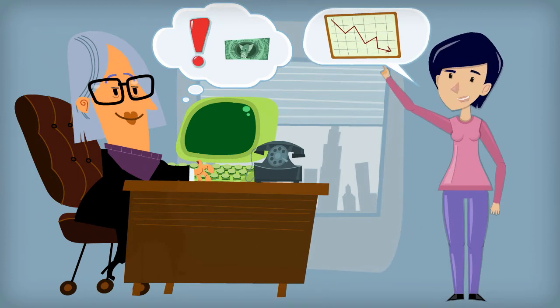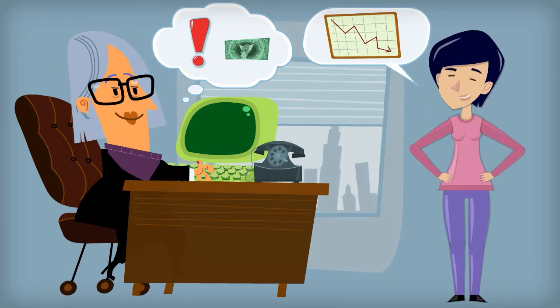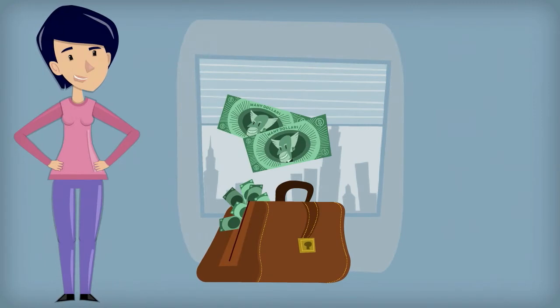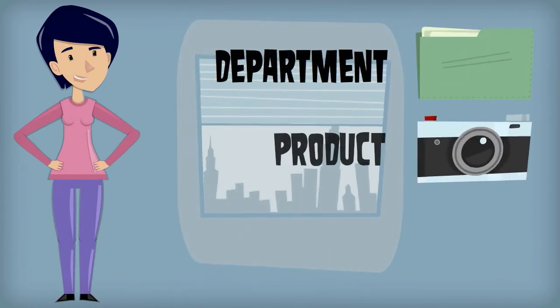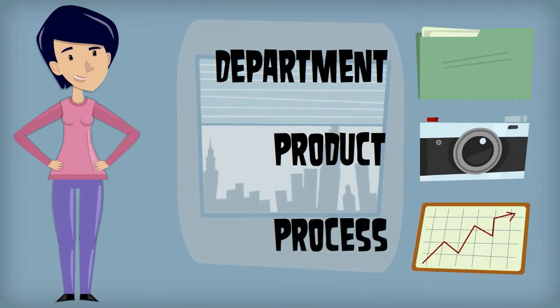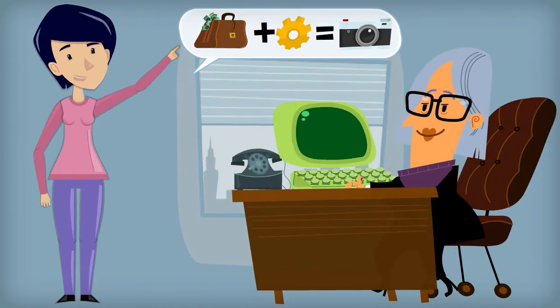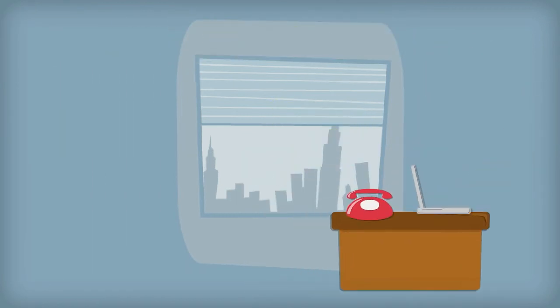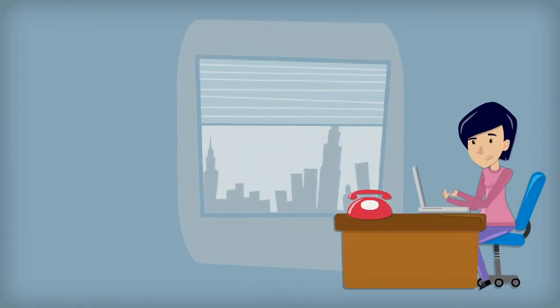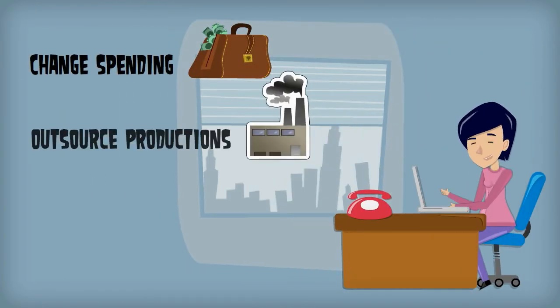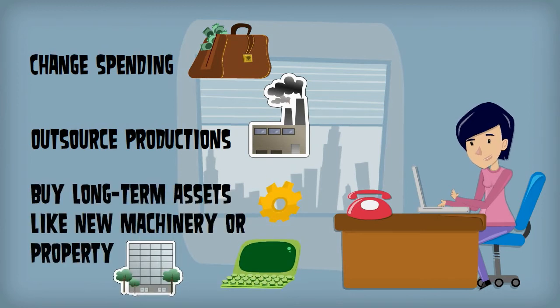You see Jane can break down the company's spending by department, product or process and tell the manager exactly how much it costs to produce the company's product or service. Using that information I can help the company find ways to change spending, outsource production or buy long term assets like new machinery or property.